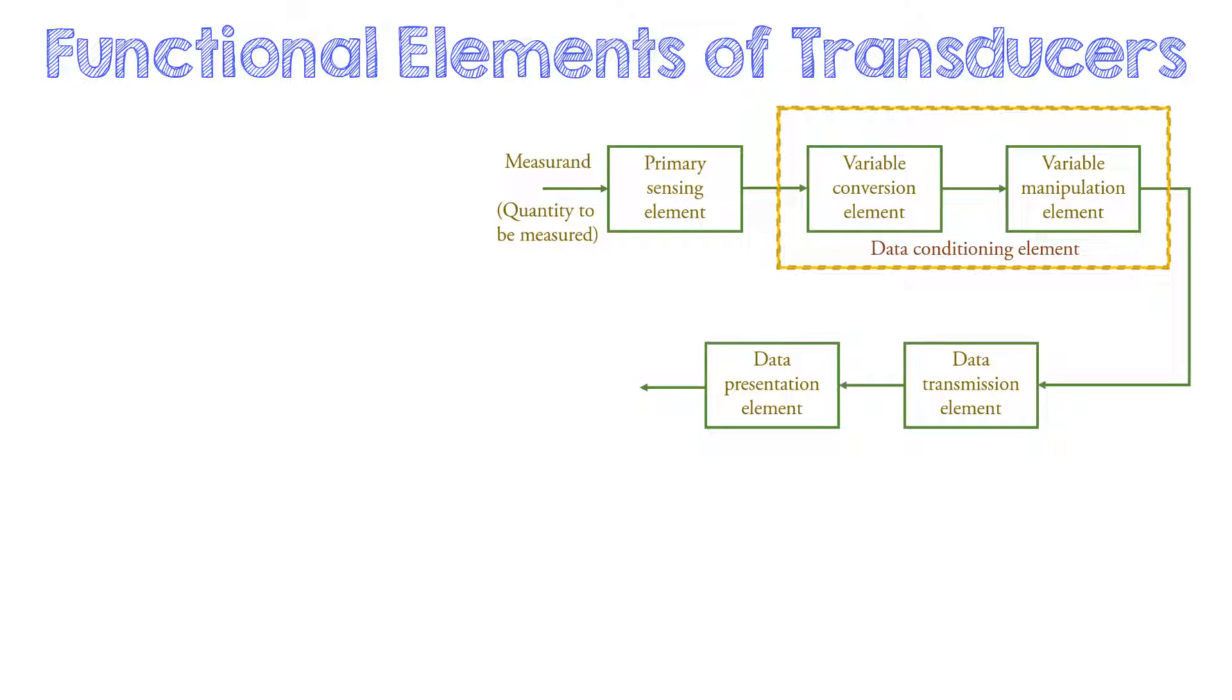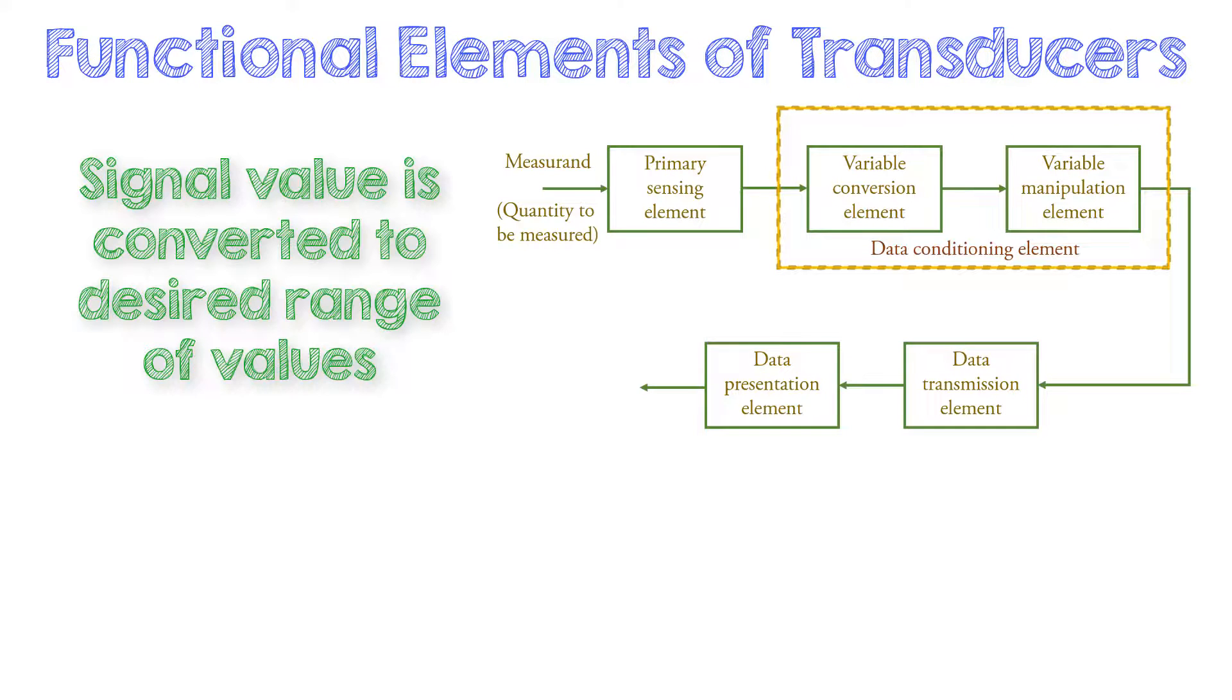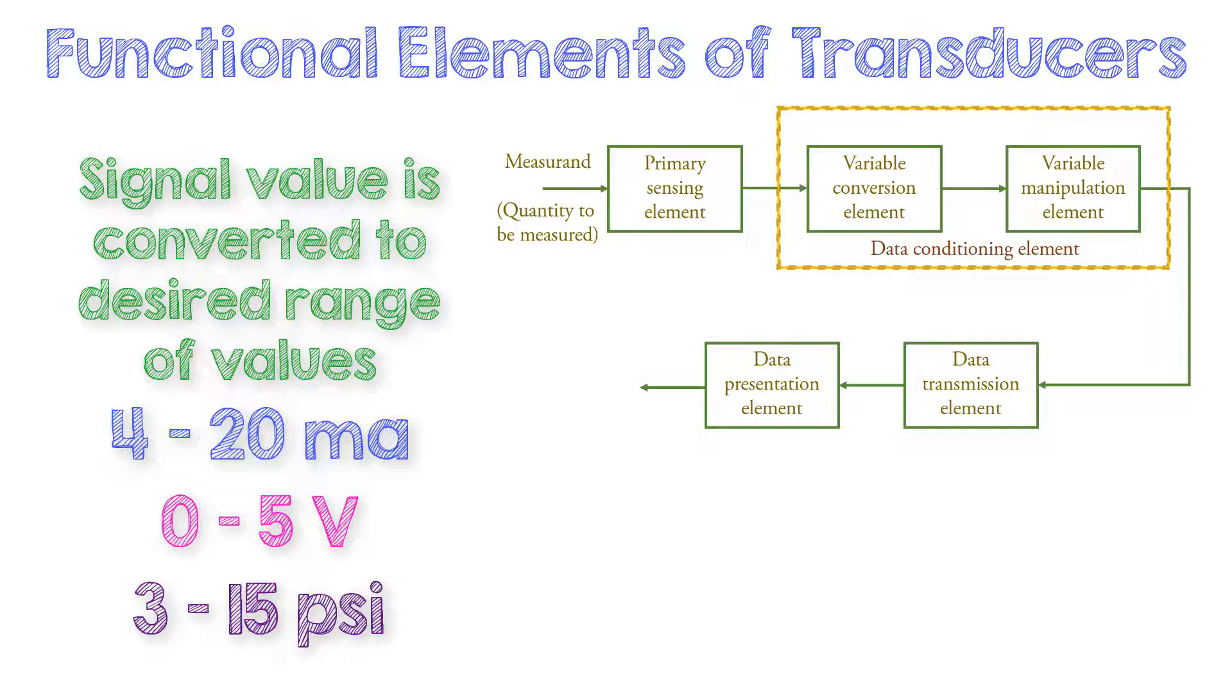The next block is variable manipulation element. Here, the signal value is changed to get a desired range of values. Generally, the accepted signal ranges in any process industries are 4 to 20 mA, 0 to 5 V, or 3 to 15 PSI. Variable manipulation element can help achieve these standard ranges using signal conditioning circuits.